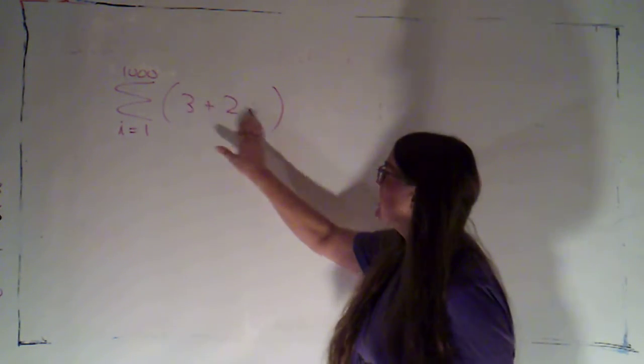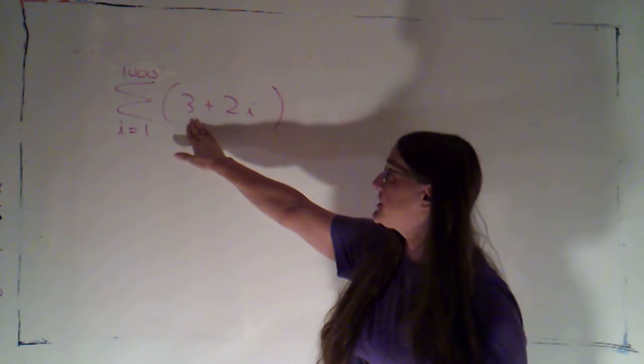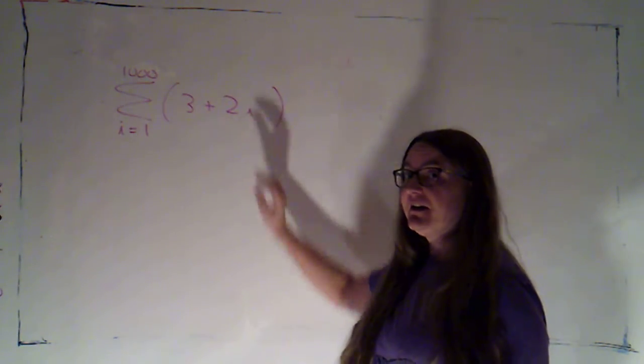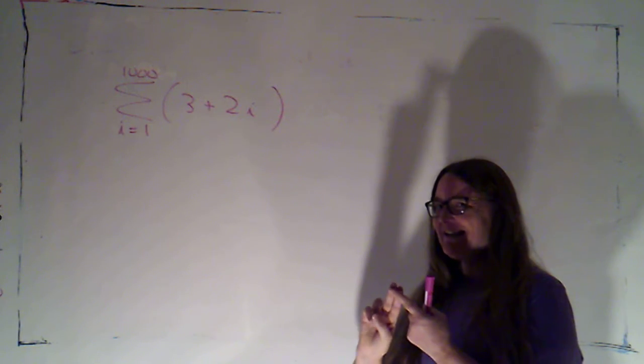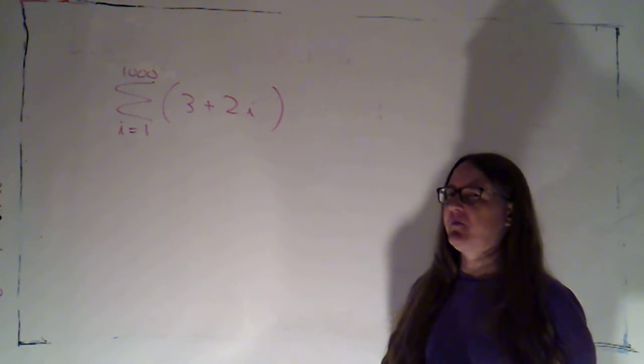Notice my terms consist of two parts: that's a constant, that's a multiple of just i. So remember there are four types of things we know how to add up: constants, i's, i squareds and i cubeds. I'm seeing two of them in there.